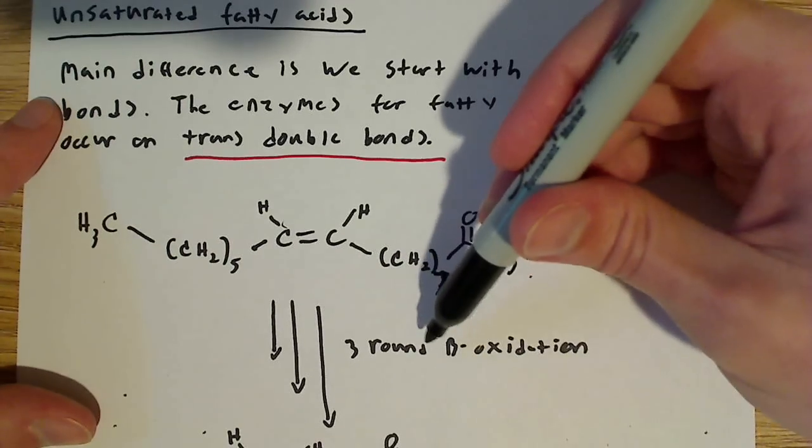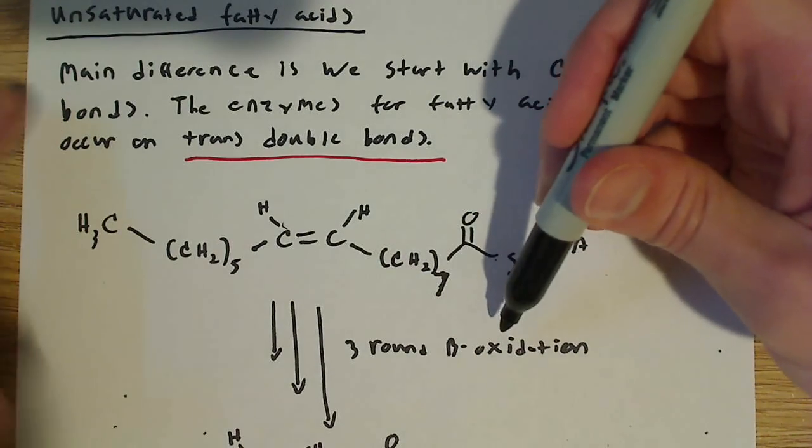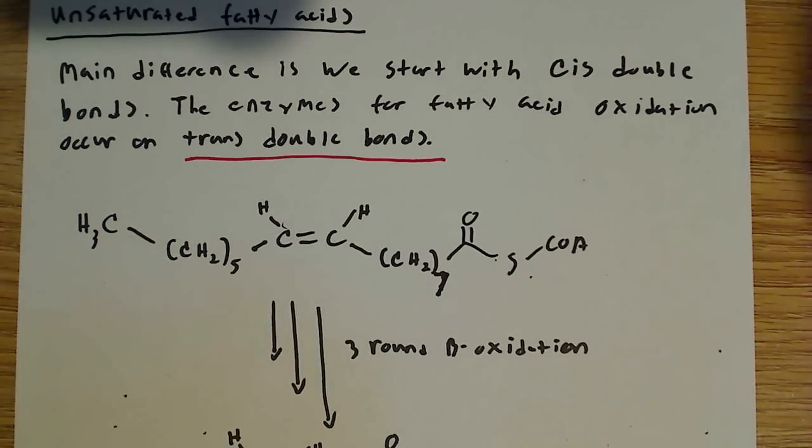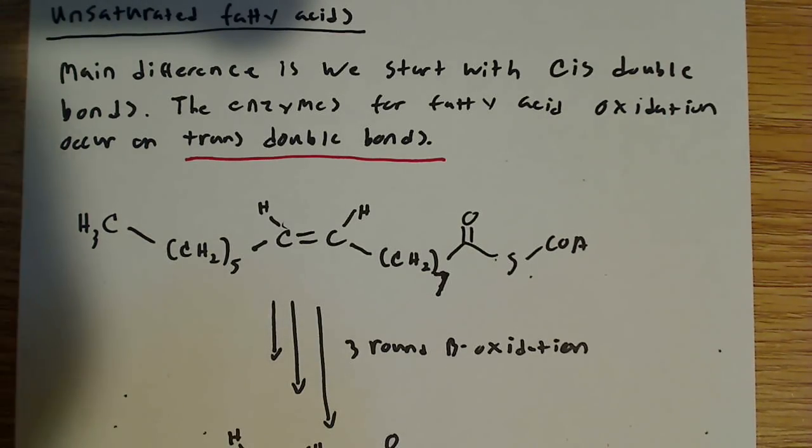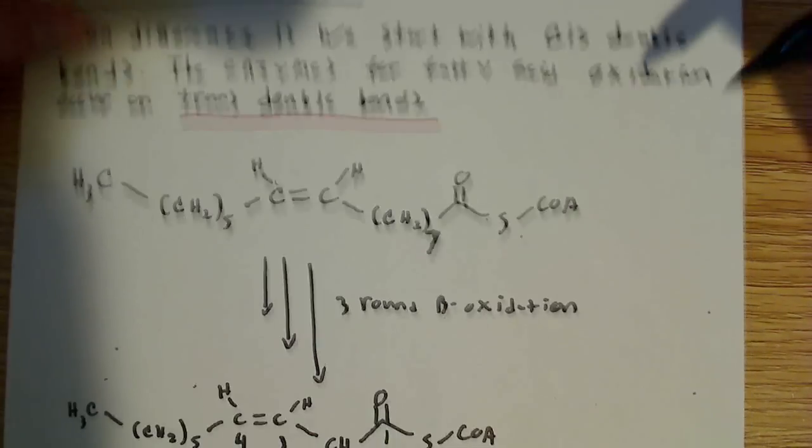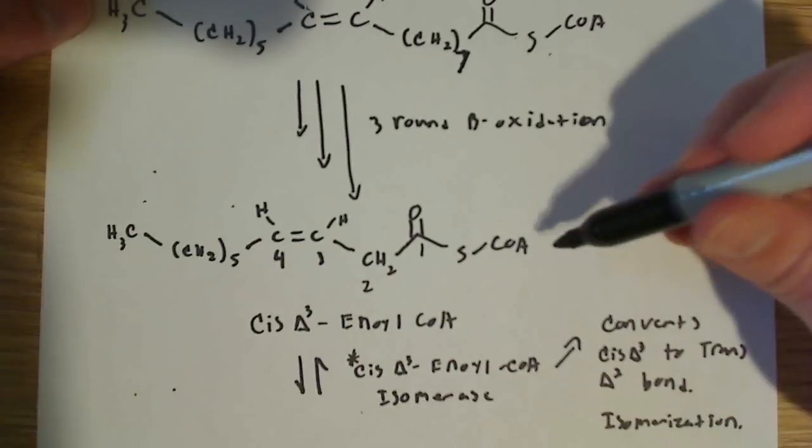So that means we can essentially go through three rounds of beta oxidation. Remember, recall, each round of beta oxidation removes two carbons. Two carbons become the acetyl-CoA. So each one removes two carbons. That's a total of six carbons, and that leaves us with this molecule here.